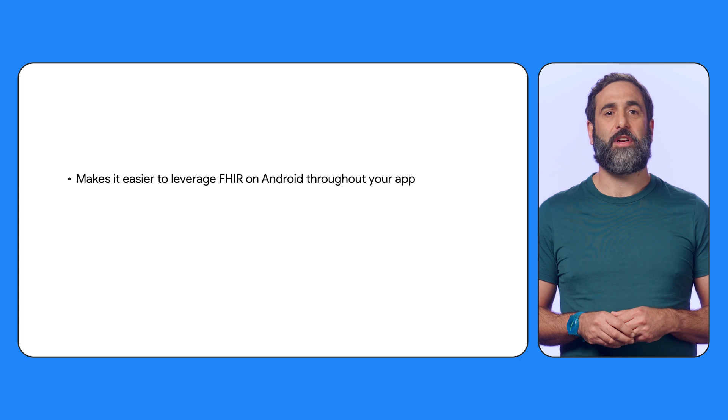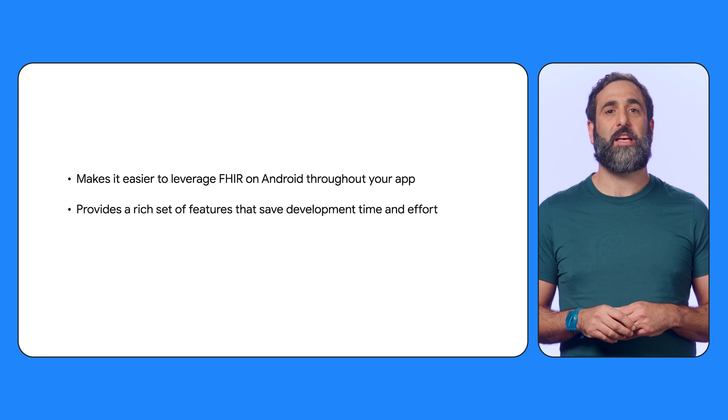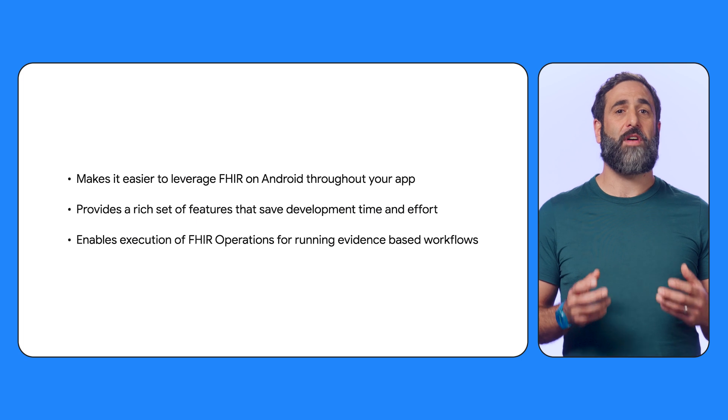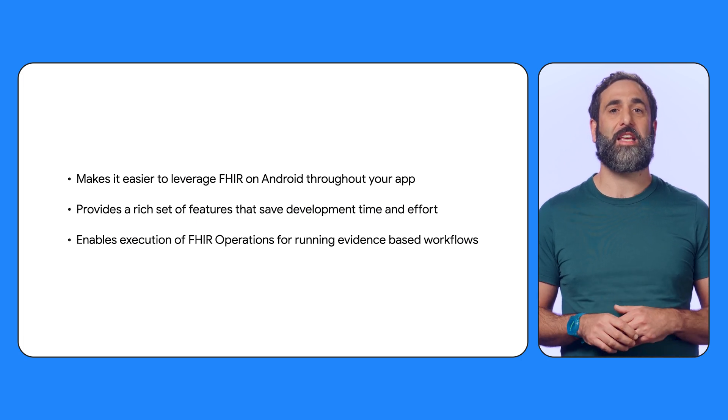In this video, you've learned about the Android FHIR SDK, a component of Open Health Stack for building powerful, secure, offline-capable FHIR-based apps. To recap, the Android FHIR SDK offers a number of key benefits to developers: it makes it easy to leverage FHIR on Android throughout your application, promoting interoperability; provides a rich set of features that saves you development time and effort; and has a unique set of advanced capabilities to execute FHIR operations for enabling delivery of evidence-based care pathways. Check out the links below and remember that you can always find more resources at our website. To keep learning about how to build with Open Health Stack, check out the next video in our series. Thanks.